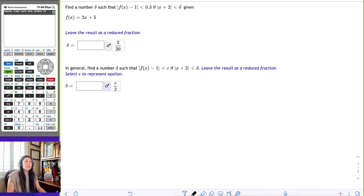In this example, we're going to find a delta for a particular epsilon while using the precise definition of a limit. Then, in the second part, we're going to find a delta for any epsilon.